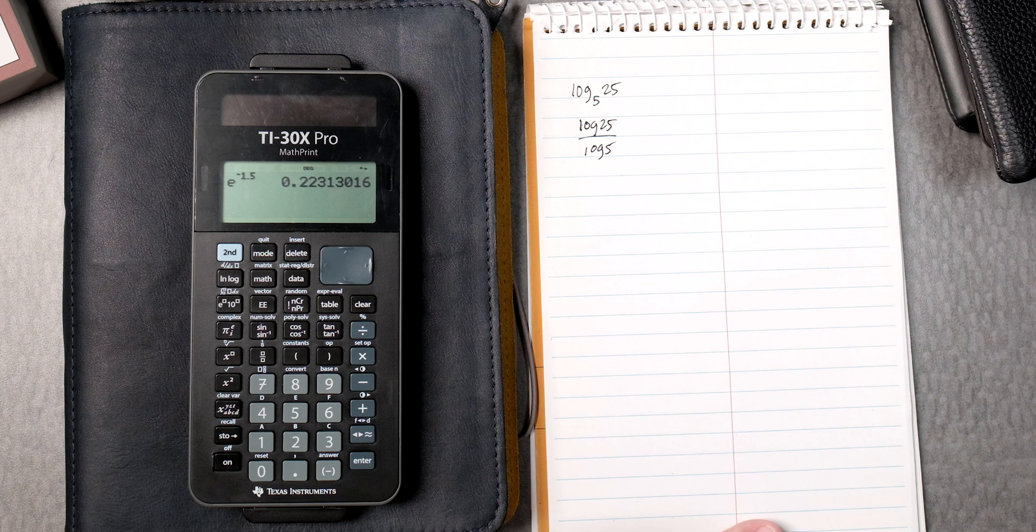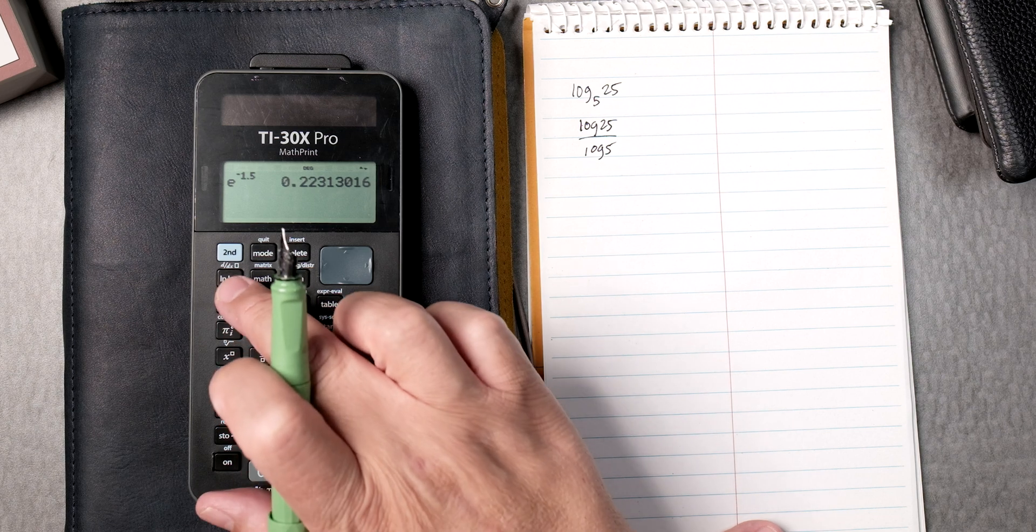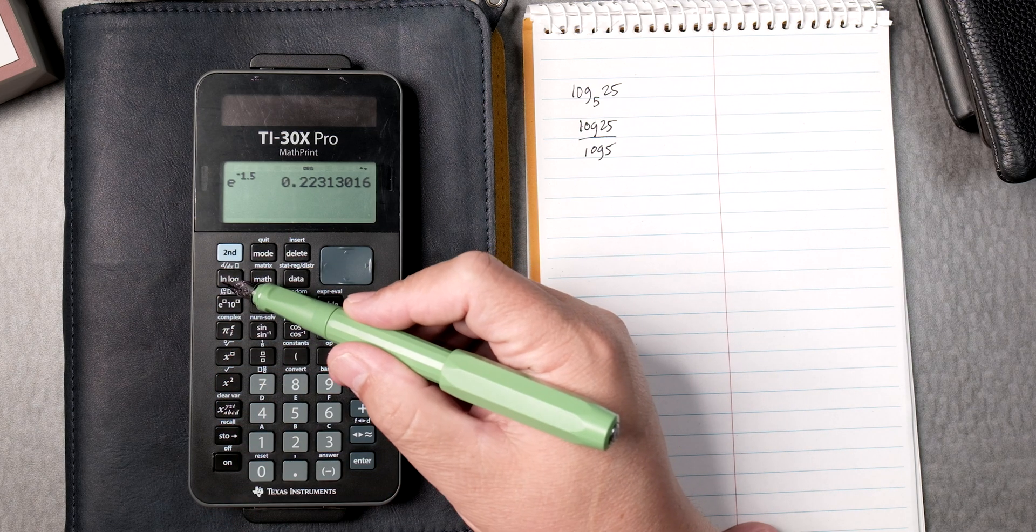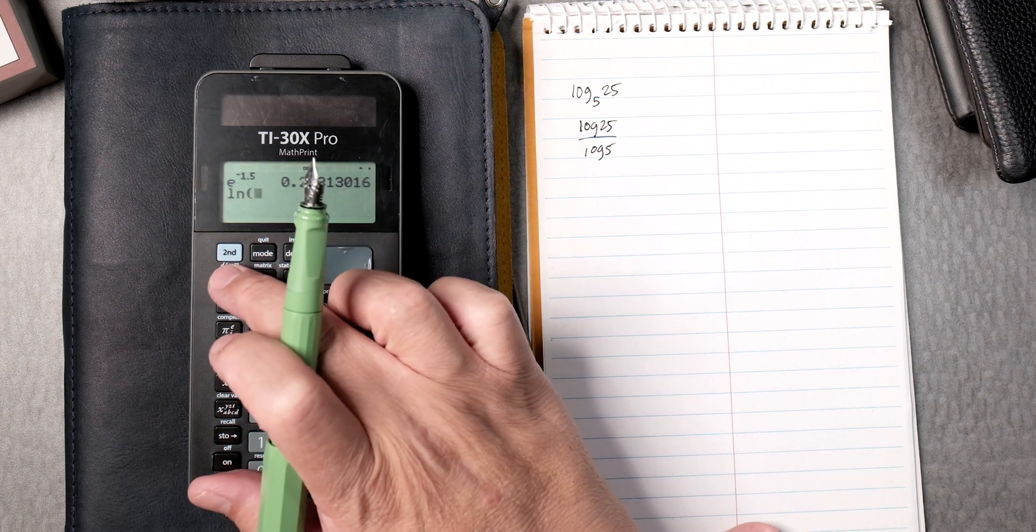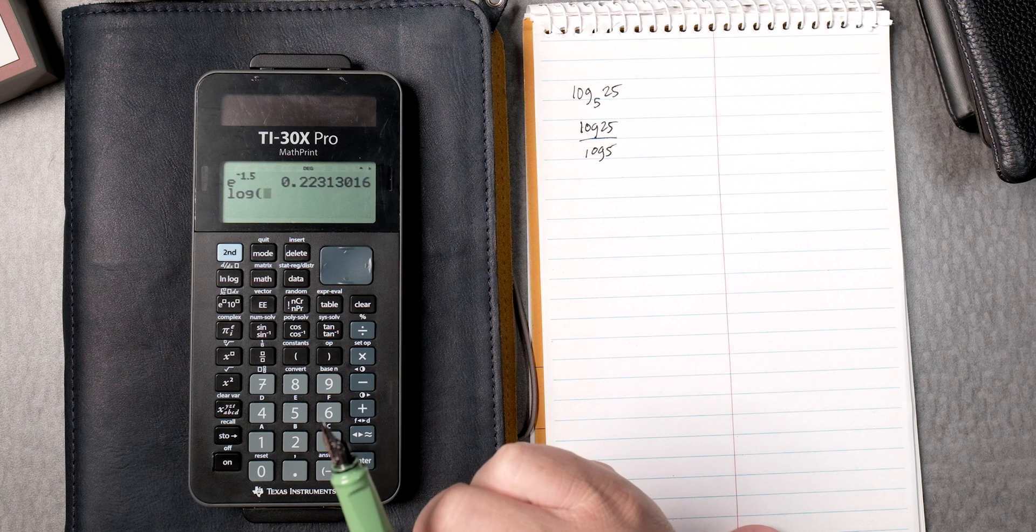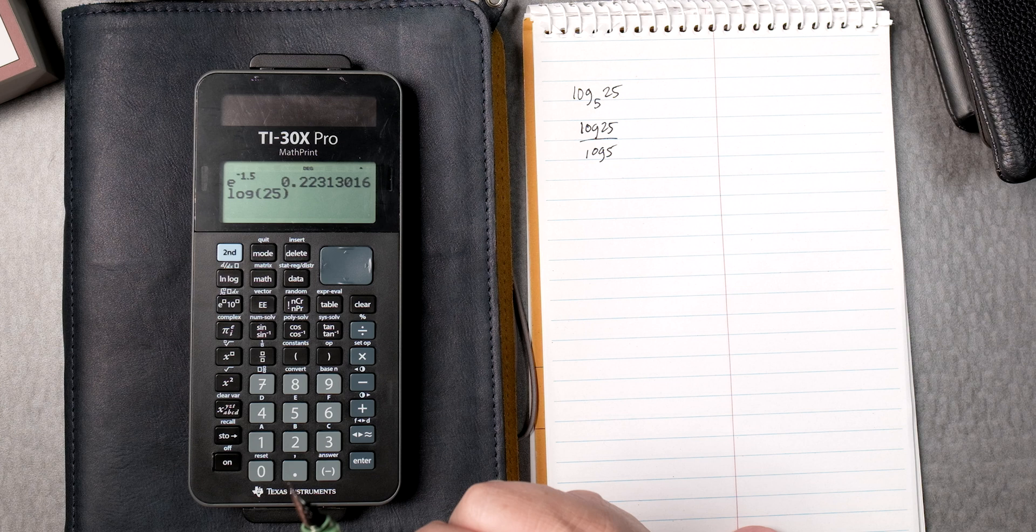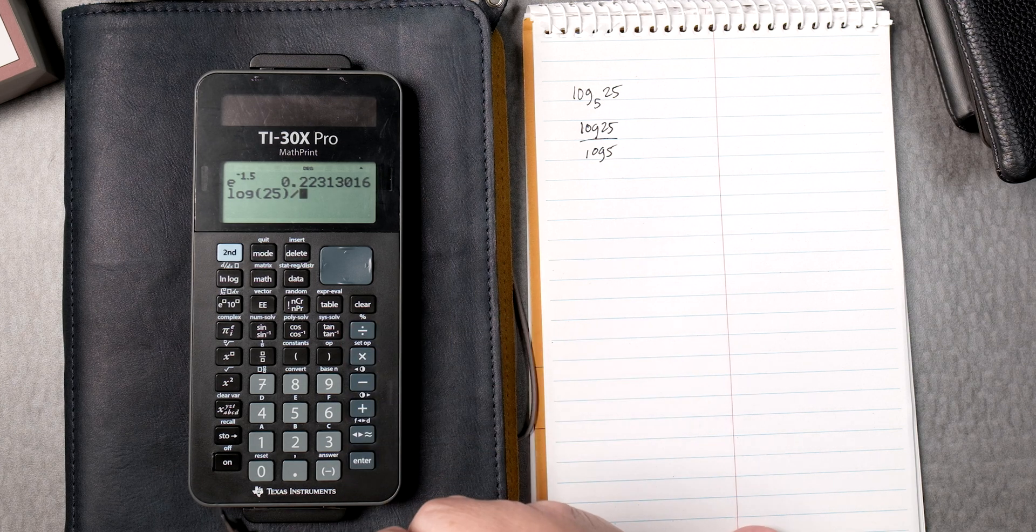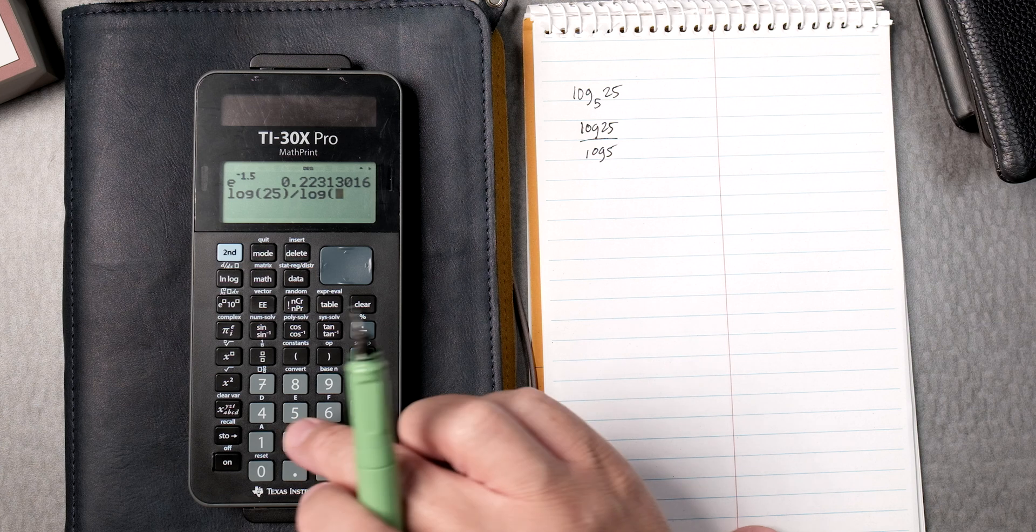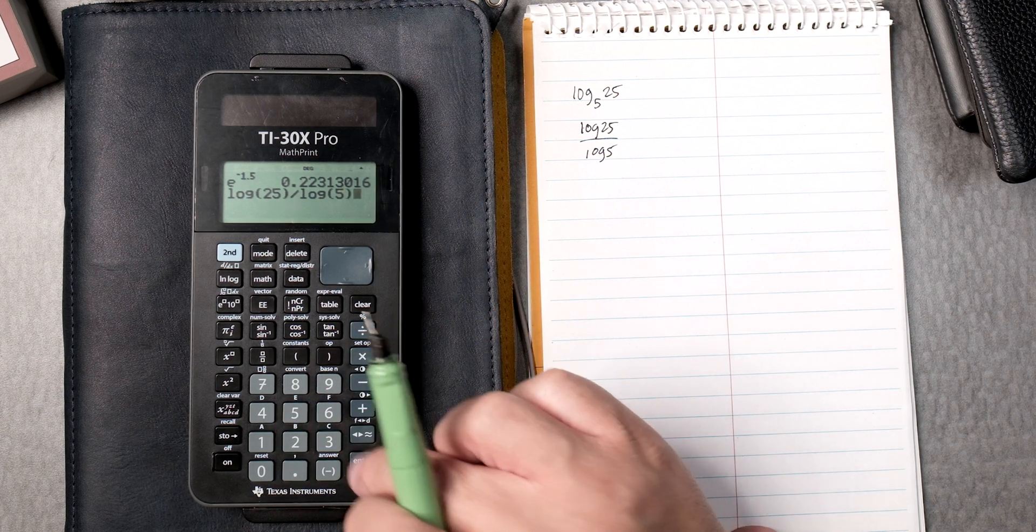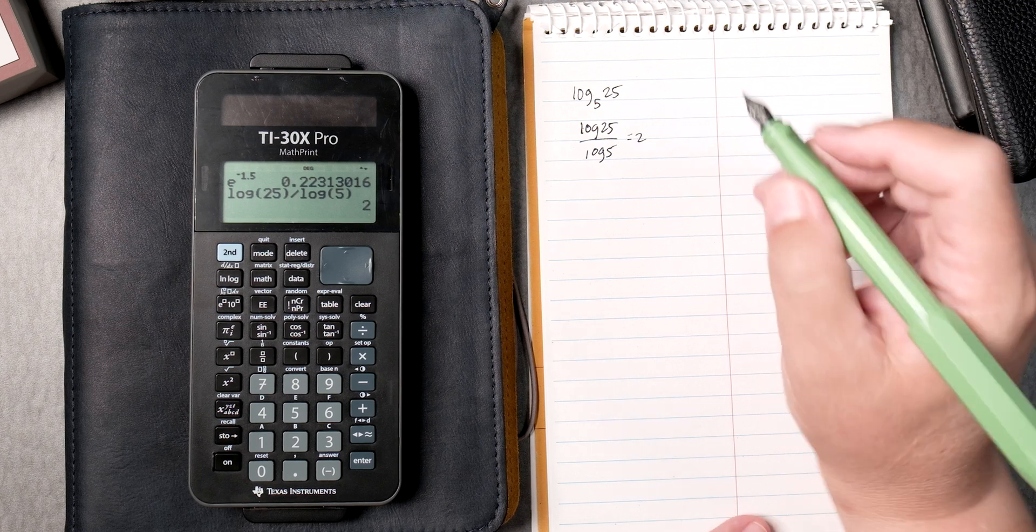So here, we got to look for the log. You can see in this key right here it has natural log and log. If you press this button once it gives you natural log, you press it again gives you the log. You type in 25, you can close it, then divide, then press the button twice for log 5. You can close it with the parentheses, enter, and it gives you 2. A lot of steps but feasible.